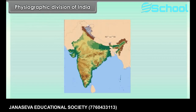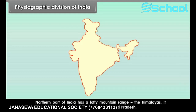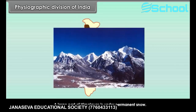Physiographic division of India. When we talk about India, we have diversified physical features. The northern part of India has a lofty mountain range — the Himalayas — which extends from Jammu and Kashmir to Arunachal Pradesh. A large part of the Himalayas is under permanent snow.